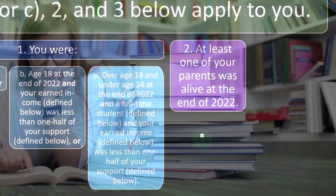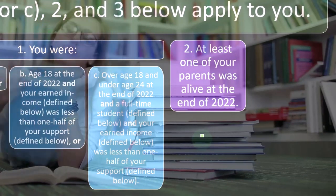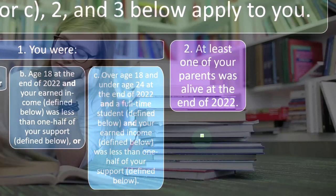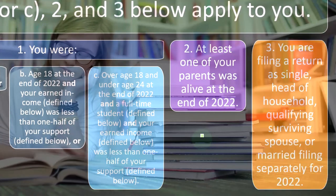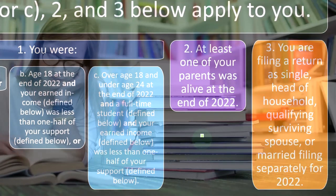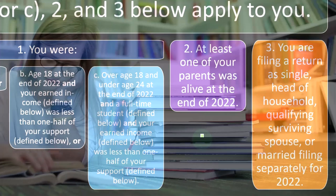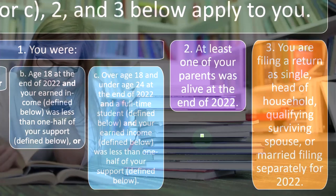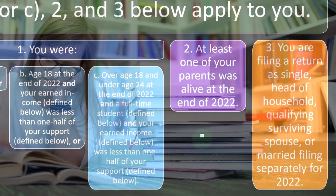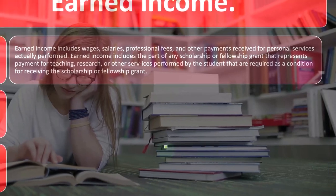Condition 2: at least one of your parents was alive at the end of 2022. Condition 3: you are filing a return as single, head of household, qualified surviving spouse, or married filing separately for 2022.